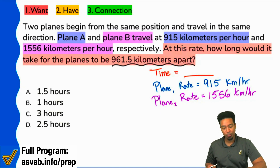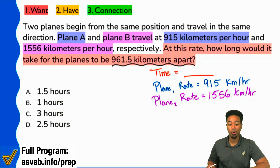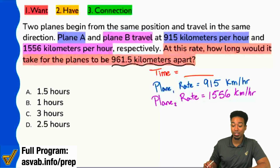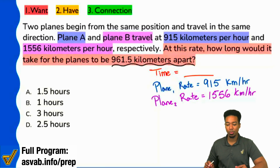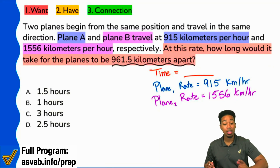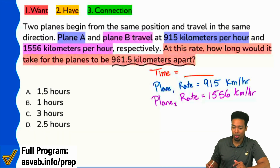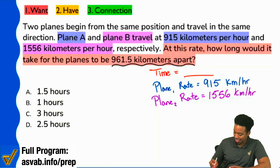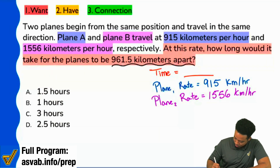My party people, that 961.5 — what does that represent? Yeah, that represents distance. It represents the distance. So we have our distance right here.